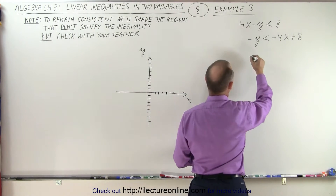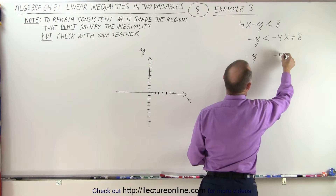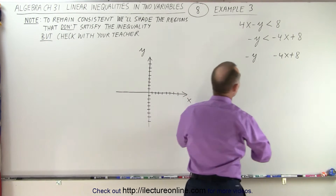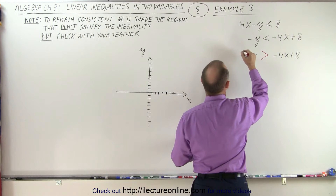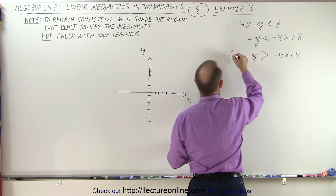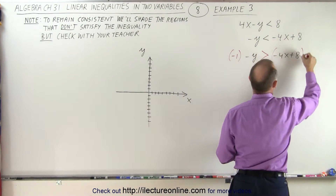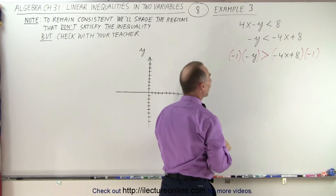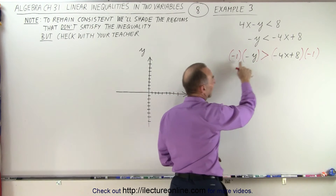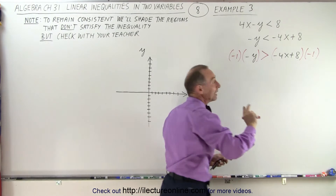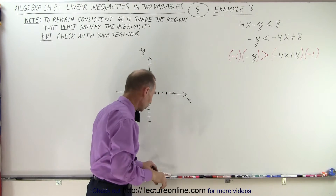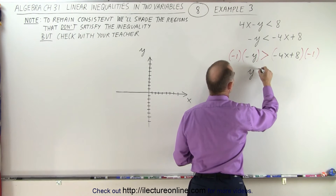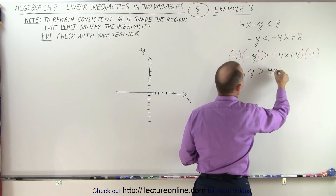So let's do that. We have negative y and minus 4x plus 8. Notice I'm going to make a special note of that — we're going to turn the inequality symbol around because I'm going to multiply the left side by negative 1 and the right side by negative 1. Simply the fact that we multiply both sides by negative 1 means we need to flip the inequality symbol. So when we simplify this, we get positive y is greater than 4x minus 8.